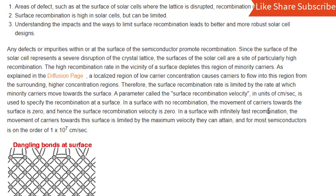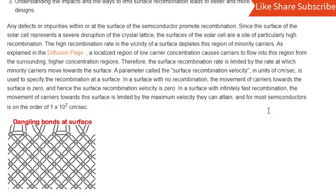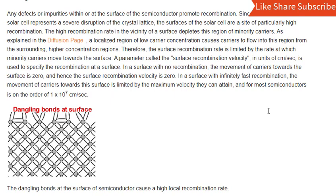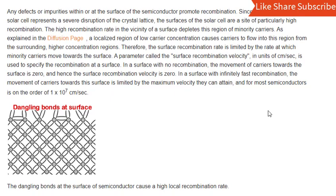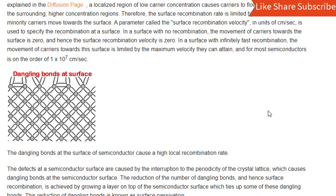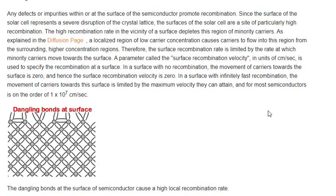The high recombination rate in the vicinity of a surface depletes this region of minority carriers. As explained in the diffusion video, a localized region of low carrier concentration causes carriers to flow into this region from the surrounding higher concentration regions.